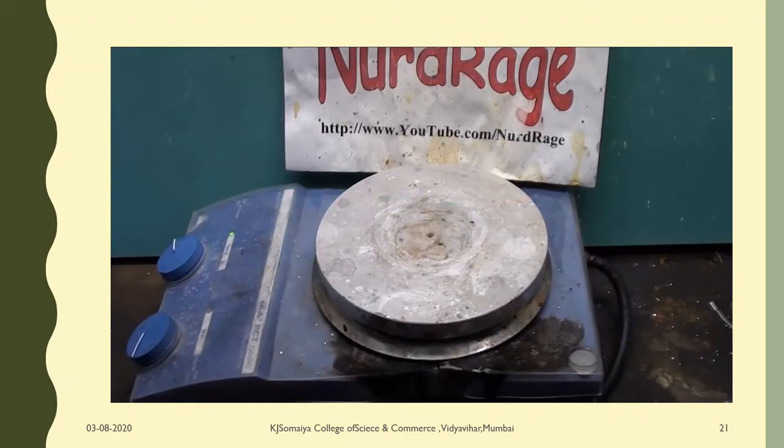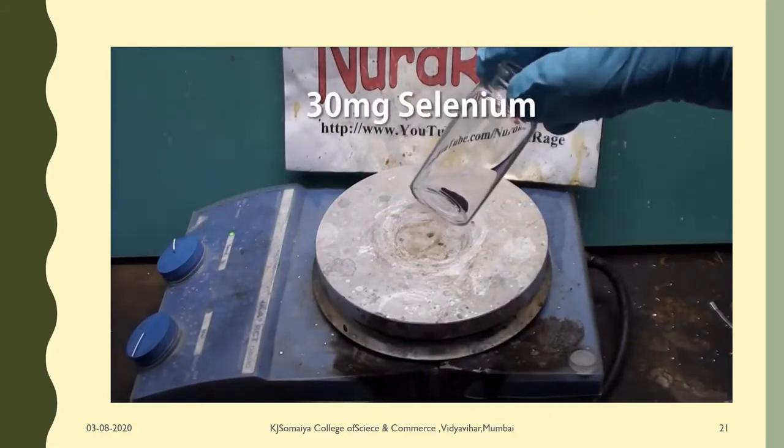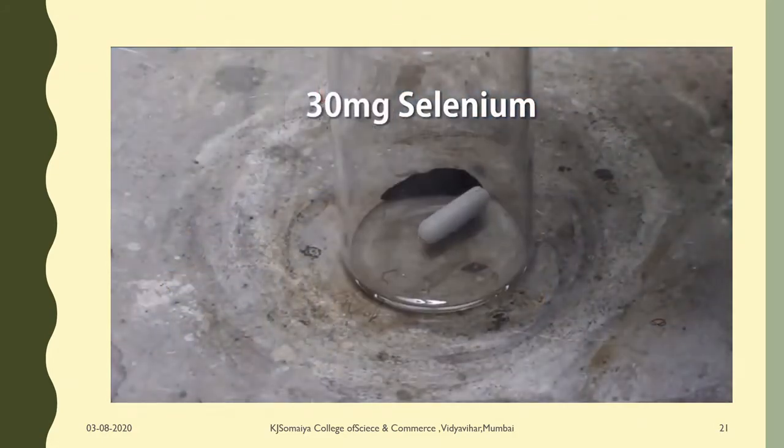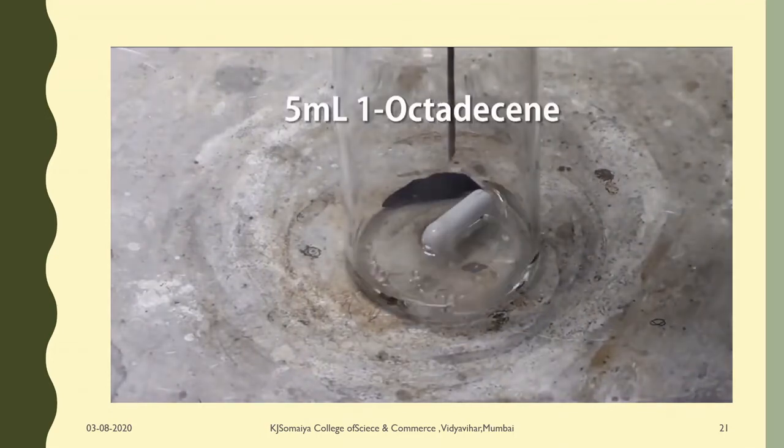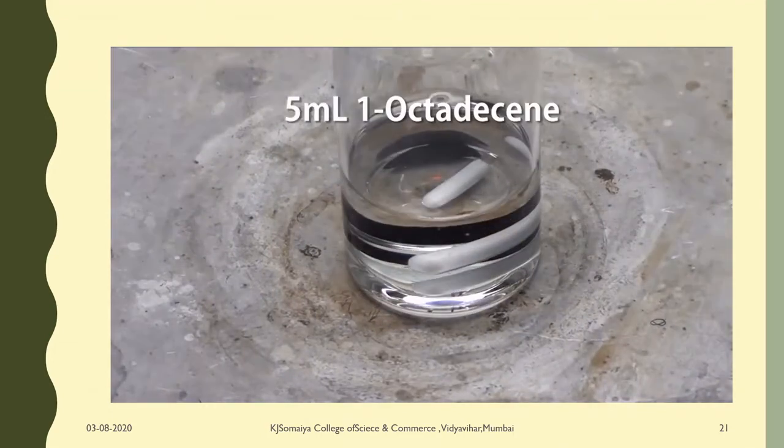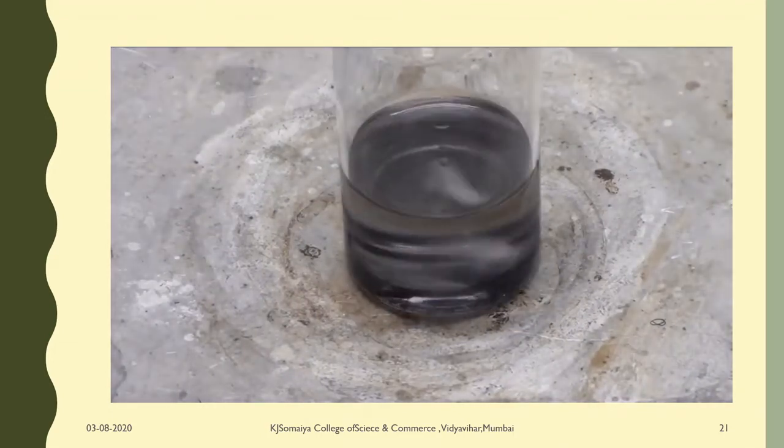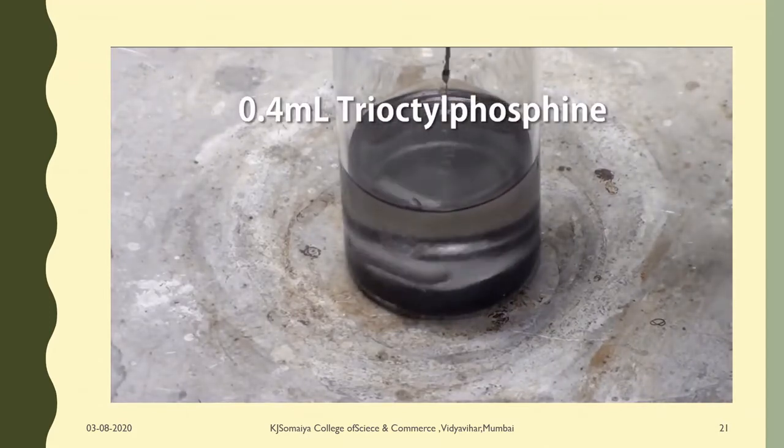First we need to make our source of selenium. Get 30mg of pure selenium powder and add to it a stir bar. Then add in 5mL of 1-octadecene and turn on the stirring. Now add 0.4mL of tri-octylphosphine.